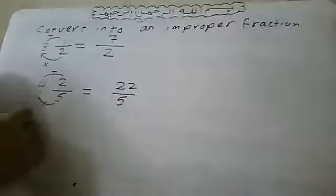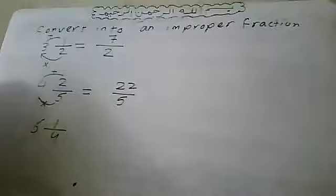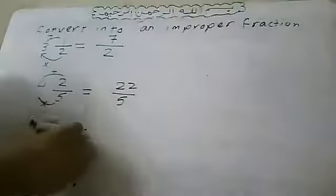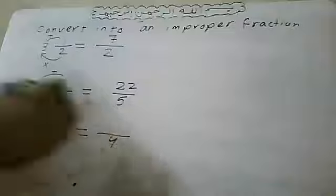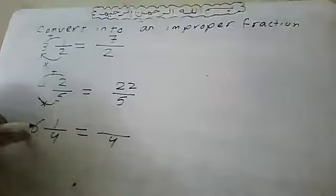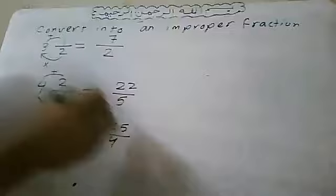Another example: six and one over four. Write four. Four times six equals twenty-four. Twenty-four plus one equals twenty-five. So the answer is twenty-five over four.